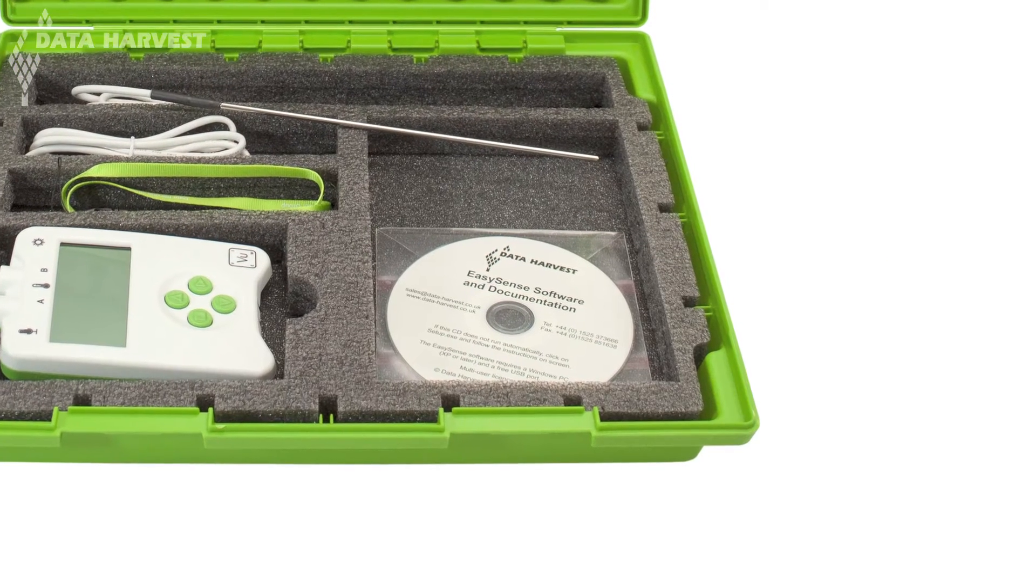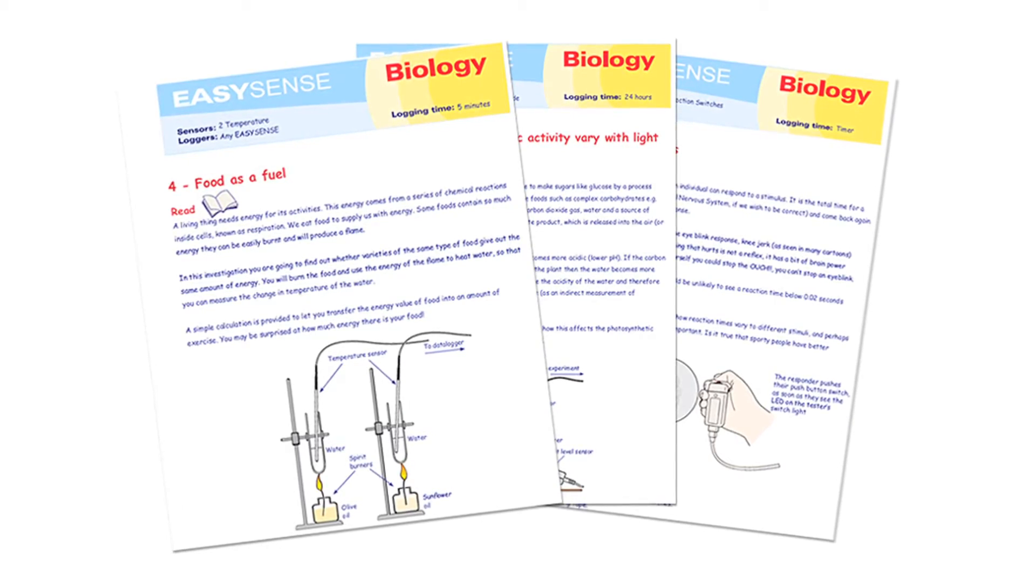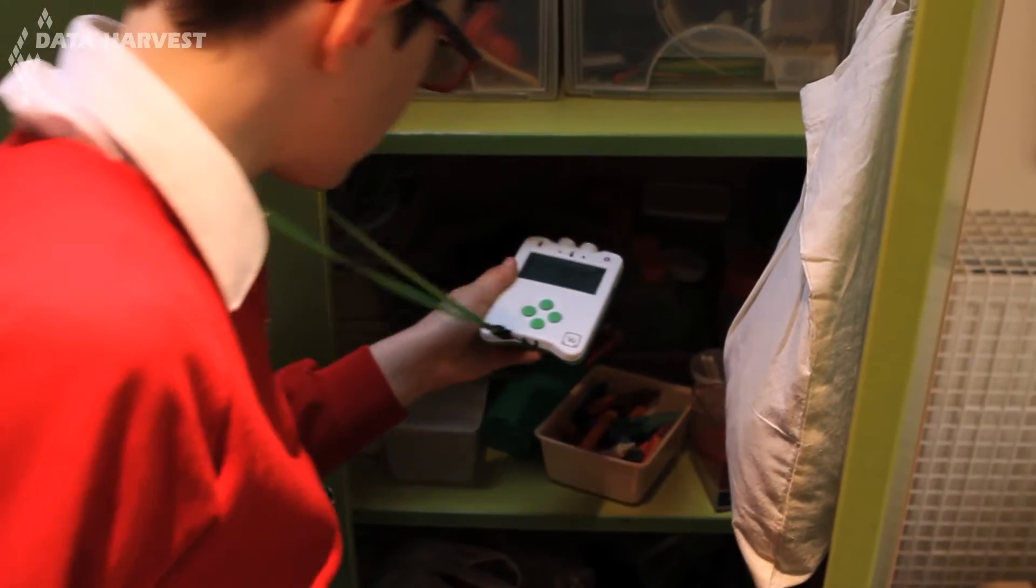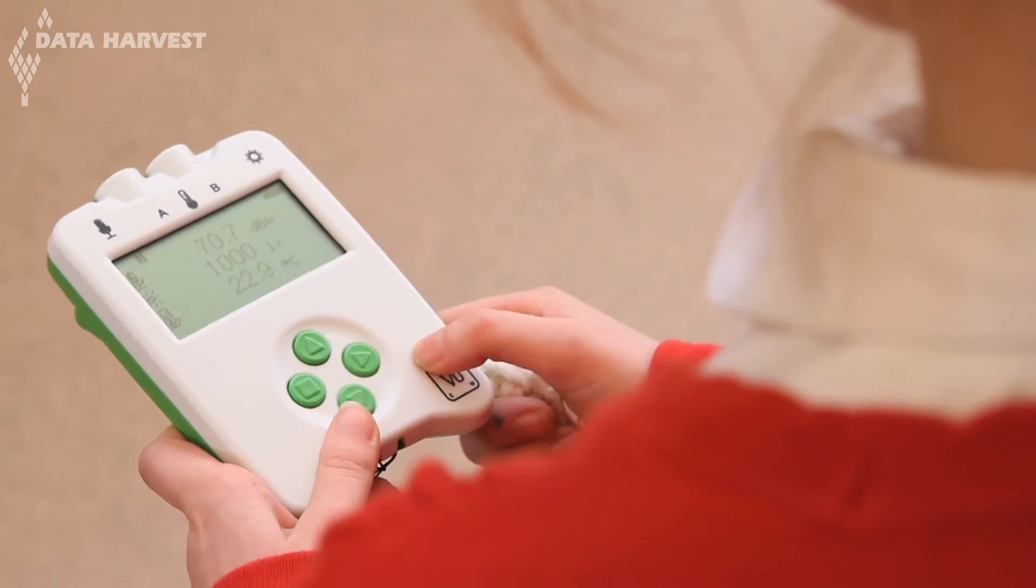Also included is the EasySense software, an e-book of over 40 experiments, and a handy lanyard. It provides an immediate set of sensors to capture the subtle changes in the world outside.